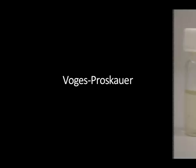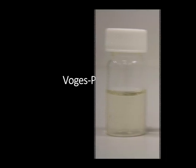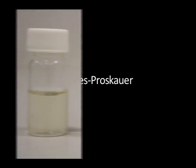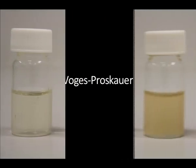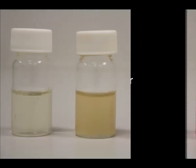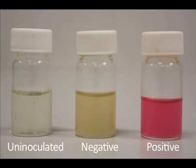The Voges-Proskauer test. An uninoculated Voges-Proskauer test appears clear and colourless. A negative result is indicated by a straw colour, while a positive result is pink in colour.